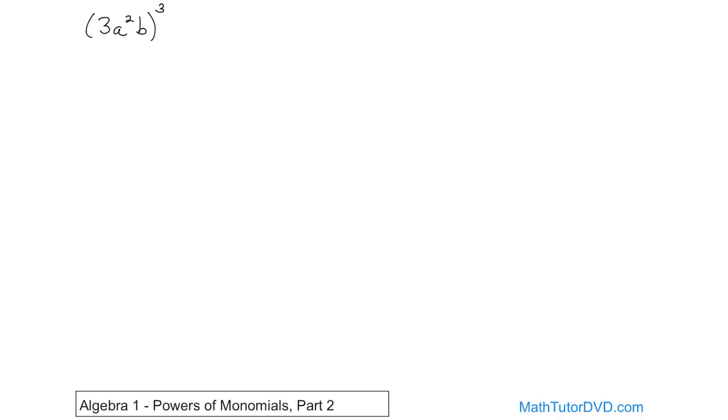And if you run into another exponent along the way, you just multiply them together. So what you're going to have is 3 raised to the power of 3 and then a raised to the power of 2 times 3 is 6, so that's going to be 6, and then b is going to be raised to the power of 3.